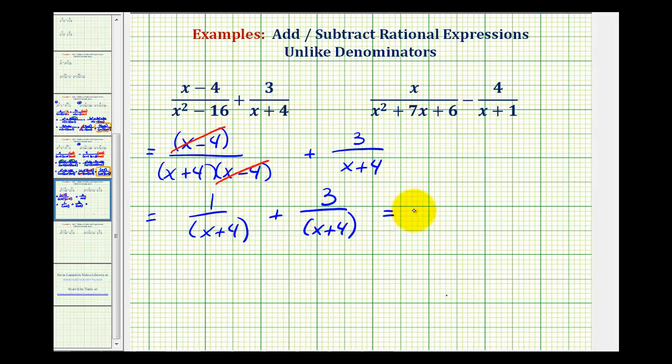So now we can add these two fractions by keeping the denominator the same and adding the numerator. And since one plus three is equal to four, we have four over the quantity x plus four.